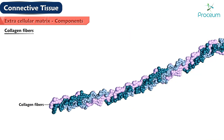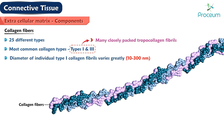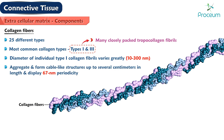Although there are at least 25 different types of collagen, the most common collagen types in connective tissue proper are types 1 and 3 collagen, both consisting of many closely packed tropocollagen fibrils. The diameter of individual type 1 collagen fibrils varies greatly, 10 to 300 nanometers. These fibrils may aggregate and form cable-like structures up to several centimeters in length and display 67 nanometers periodicity.